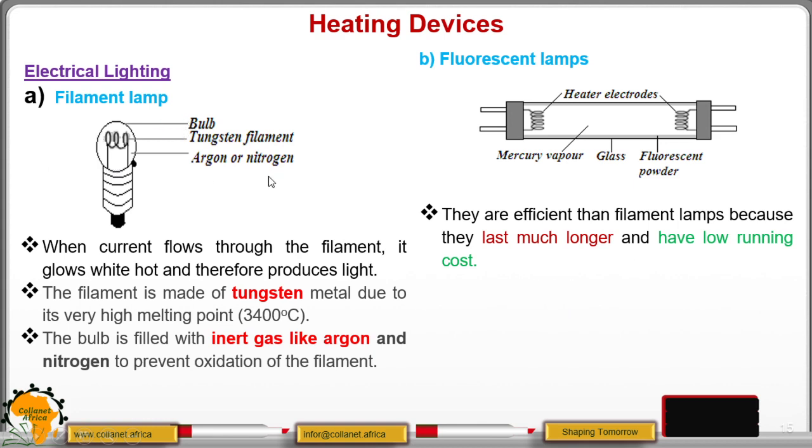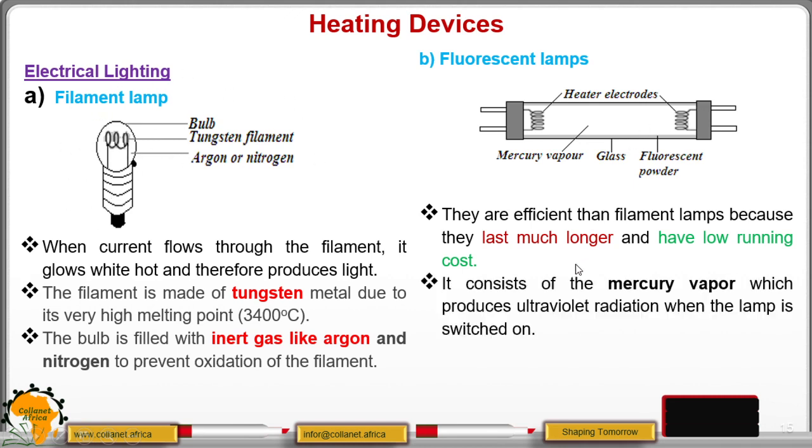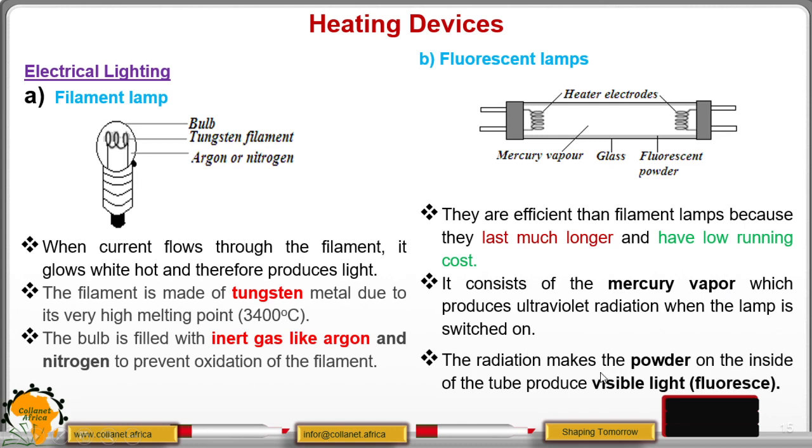And that is why nowadays you find that people are replacing the filament bulb or filament lamp with fluorescent lamps. Now it consists of the following. You have the mercury vapor inside. And this one produces ultraviolet radiation when the lamp is switched on. Now the radiation, remember we are talking of ultraviolet.